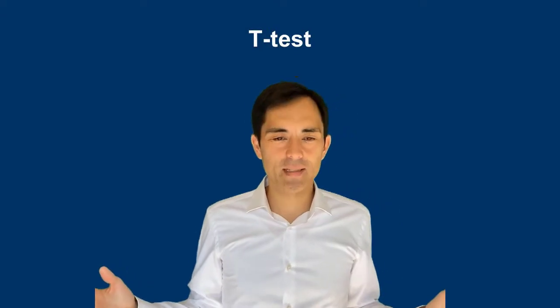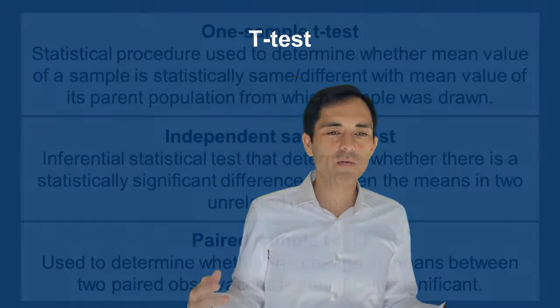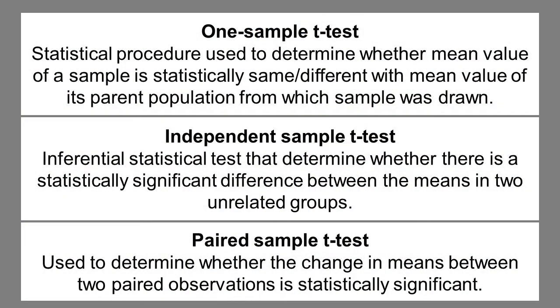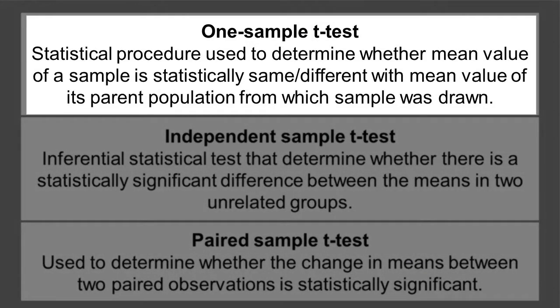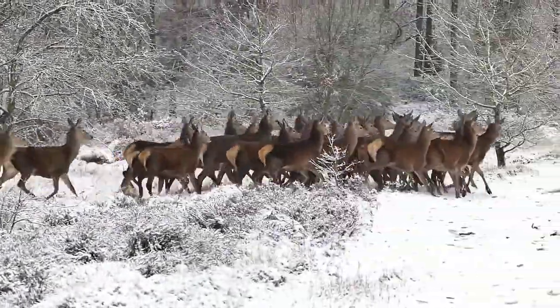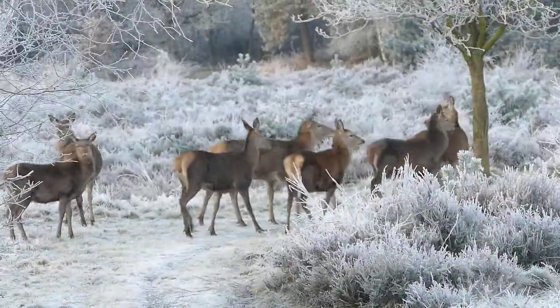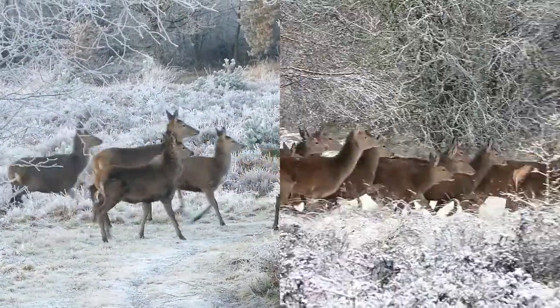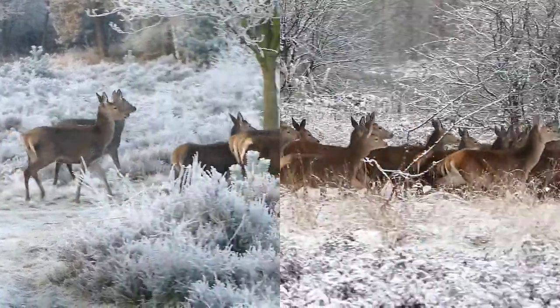There are different types of t-tests. The one-sample t-test describes a statistical procedure used to determine whether the mean value of a sample is statistically the same or different from the mean value of its parent population from which the sample was drawn. In other words, you have a large sample, draw a sub-sample, and then compare whether the sub-sample is the same or different from the whole sample.